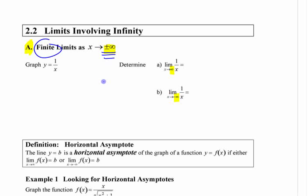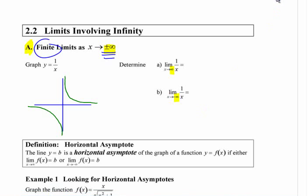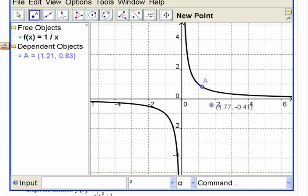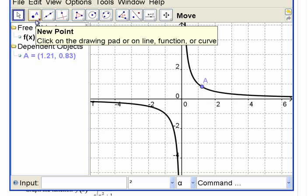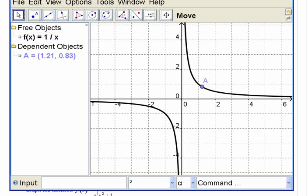We're going to think about these in terms of graphs first, because this function — 1 over x — you probably know what the graph looks like. It looks roughly something like that, except it doesn't actually touch the axis. You could graph it on your calculator if you want to convince yourself. Put a point on here somewhere and you can move that around and see what's happening.